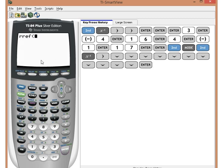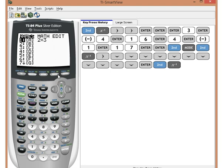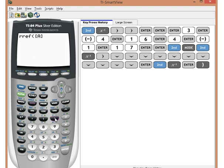Hit enter. And now we want to reference the matrix A. So hit second matrix. You have A listed there. Hit enter. Hit list the matrix. Close the parenthesis. Hit enter.